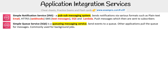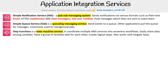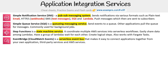You have SQS — this is a queuing messaging service that sends events to a queue. Other applications pull the queue for messages, commonly used for background jobs. We have Step Functions as a state machine service; it coordinates multiple services into a serverless workflow, easily shares data among Lambdas, can have a group of Lambdas wait for each other, and creates logical steps. It also works with Fargate tasks.